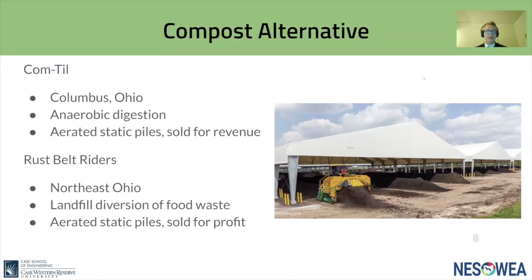We examined two Ohio-based compost companies: Comtil and Rust Belt Riders. Comtil is based in Columbus, Ohio and uses anaerobic digestion to stabilize the biosolids prior to composting. They compost using the aerated static pile method and are able to generate steady revenue from their product. Rust Belt Riders, based in Northeast Ohio, deals primarily with food waste and similarly uses the aerated static pile method, selling their compost for profit.